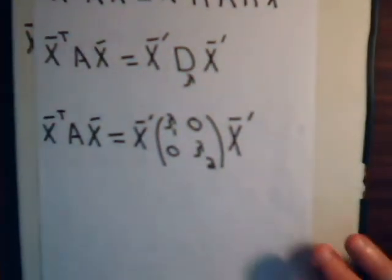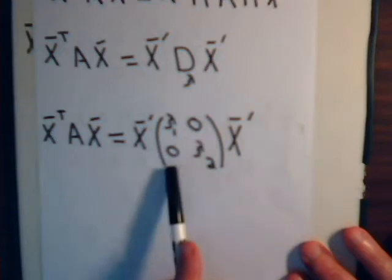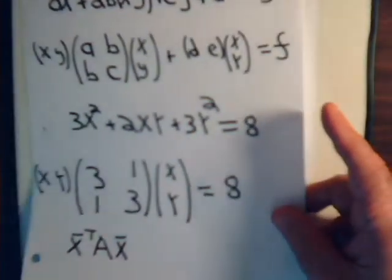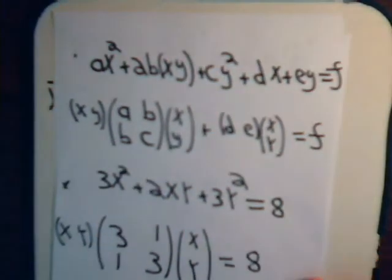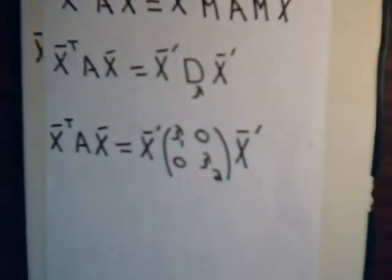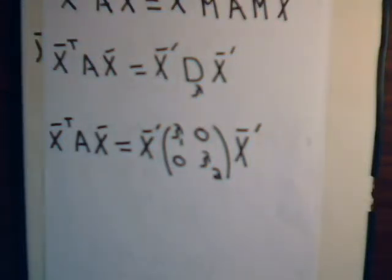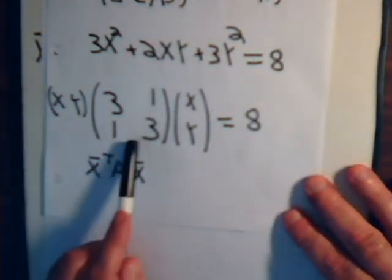So we started with the original quadratic expression and now have a much simpler expression in the primed coordinates. The off-diagonal elements are zero — and remember, it was the off-diagonal elements that were associated with the xy term. In the prime coordinate system there are no off-diagonal elements, so there will be no xy terms; those have been eliminated. That's the general strategy.